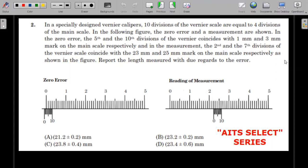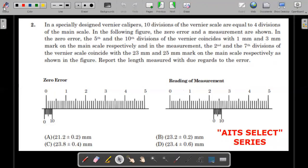For those who have not yet solved this question because they are new to this channel, just pause the video here, try to give it a fair attempt, and then only move on to the solution. In a specially designed vernier, which means not your textbook style of 1 MSD minus 1 VSD, 10 divisions of Vernier scale are equal to 4 divisions of the main scale.